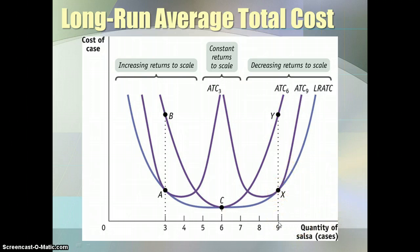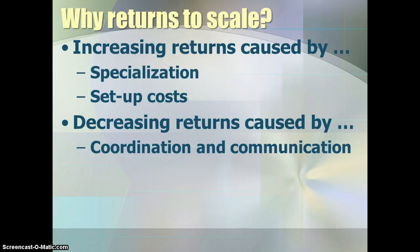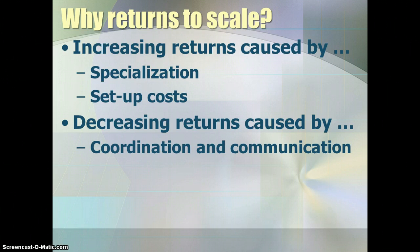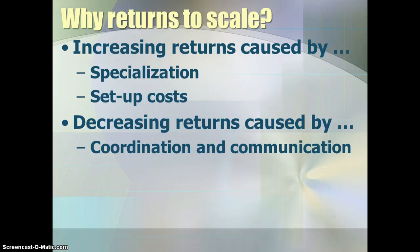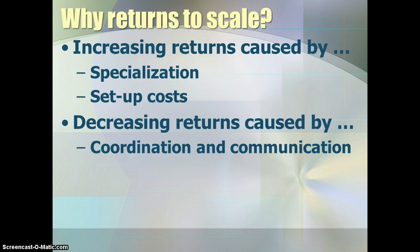Even if I'm experiencing decreasing returns to scale, if I expect nine cases of salsa to be sold, I'll still buy nine machines because it does minimize my average total cost. Increasing returns to scale are caused by improvements in specialization — people become more productive and produce more at lower cost. But we lose returns to scale because of coordination and communication problems: as organizations and bureaucracies get larger, it becomes harder to take advantage of efficiency gains, and average total costs begin to rise.